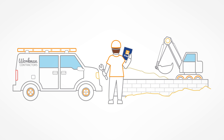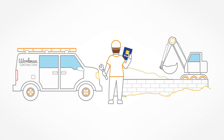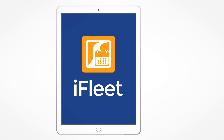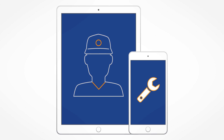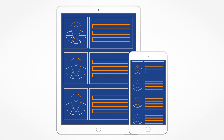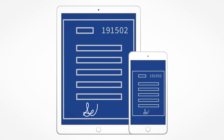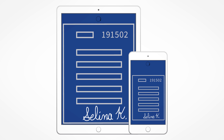Once your tech shows up on site, they can use iFleet to review customer or equipment information and add line items to work orders as needed. After a job is finished, the tech can collect the customer signature and file any forms immediately, simply by syncing their device.